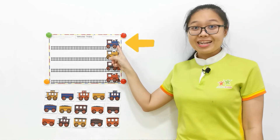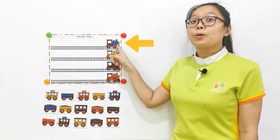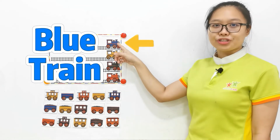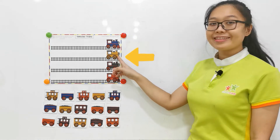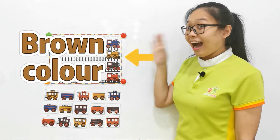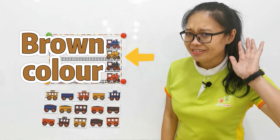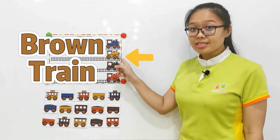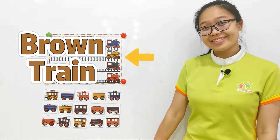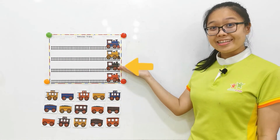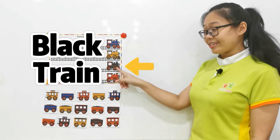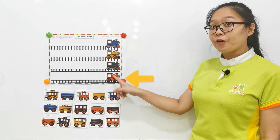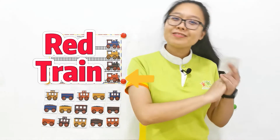The first one — what color is this? This is the blue color. This is the blue trend. How about the next one? Brown color. Yes, this is the brown color. This is the brown trend. How about the next one? This is the black trend. And the last one — this is the red trend. Well done, everyone.